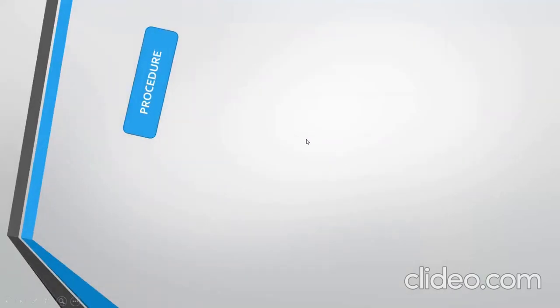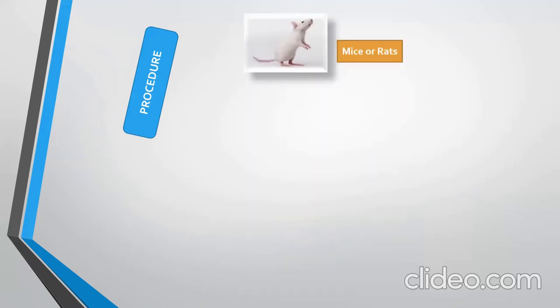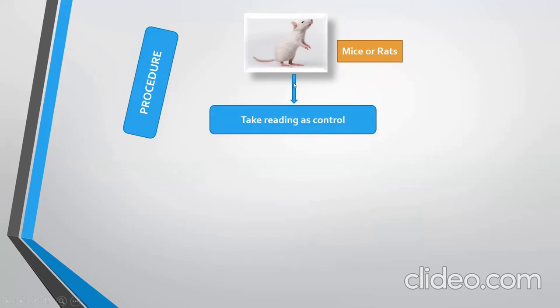Before starting the procedure, it is important to keep the laboratory quiet while performing this experiment to avoid unintended results. First, take mice or rats of a specific weight and divide the animals into two groups — one is the control group which receives saline solution, and the other is the test group which receives the test drug. Now place the animal into the light compartment of the apparatus.